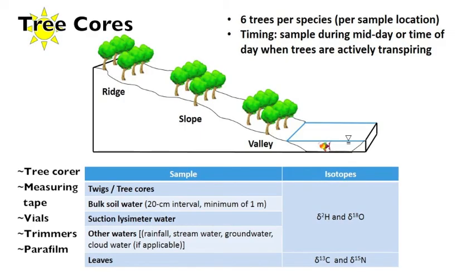This clip will describe the collection of tree cores for isotope sampling. For this sampling, we would like to emphasize the importance of sampling at least 6 trees per species per sample location.